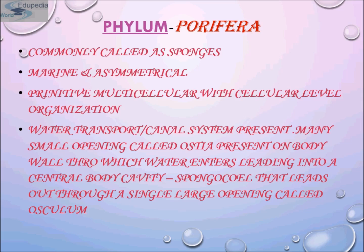This pathway of water transport is helpful in food gathering, respiratory exchange, and removal of waste. Choanocytes, or collar cells, line the spongocoel and the canals. Digestion is intracellular. The body is supported by a skeleton made up of spicules or spongin fibers.